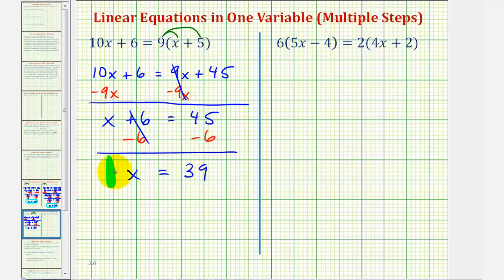So our solution is x = 39, which means if we substitute 39 into the original equation it would satisfy the equation. So let's go ahead and check our solution.